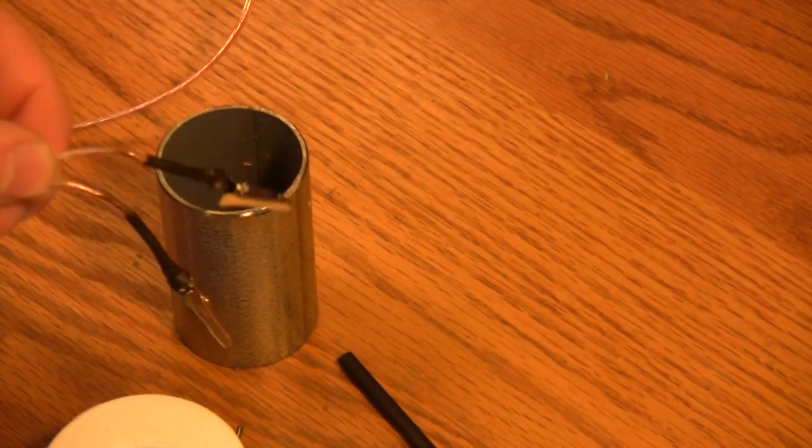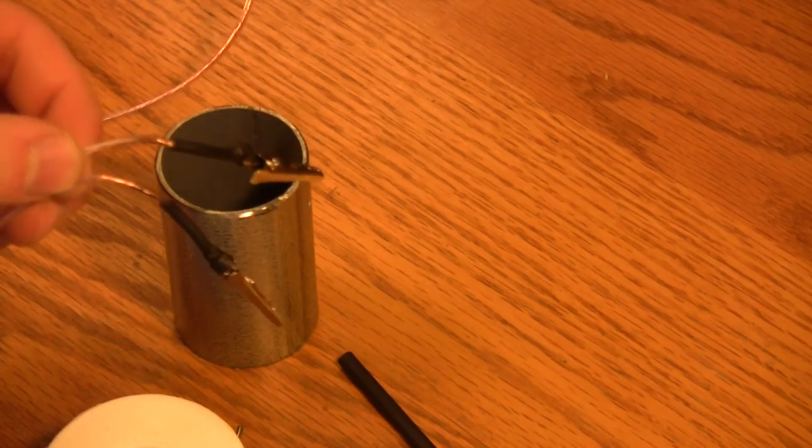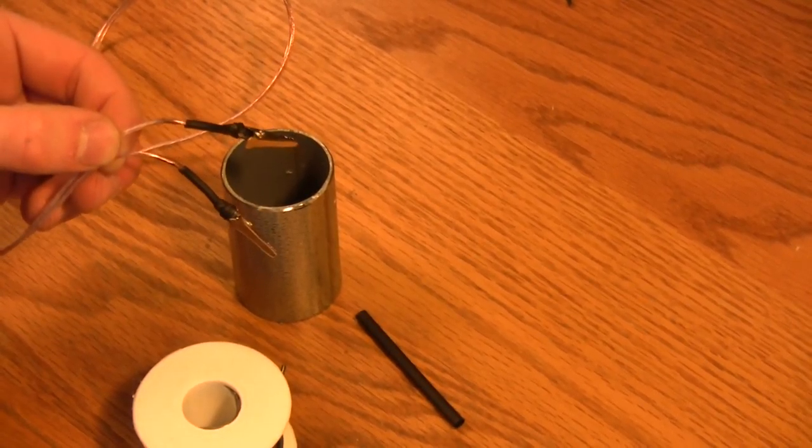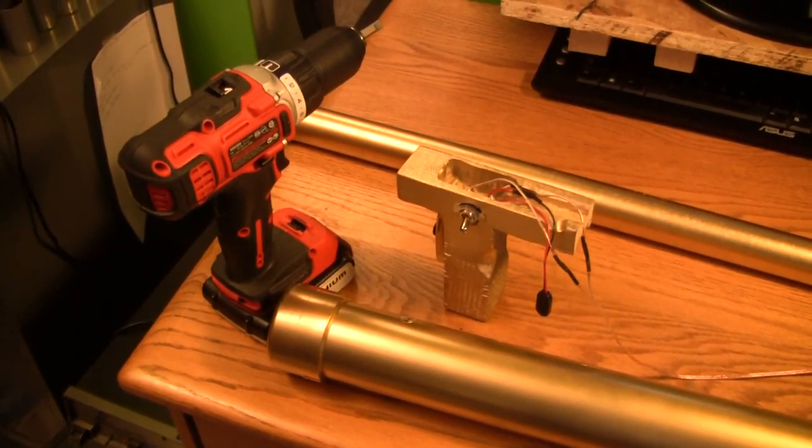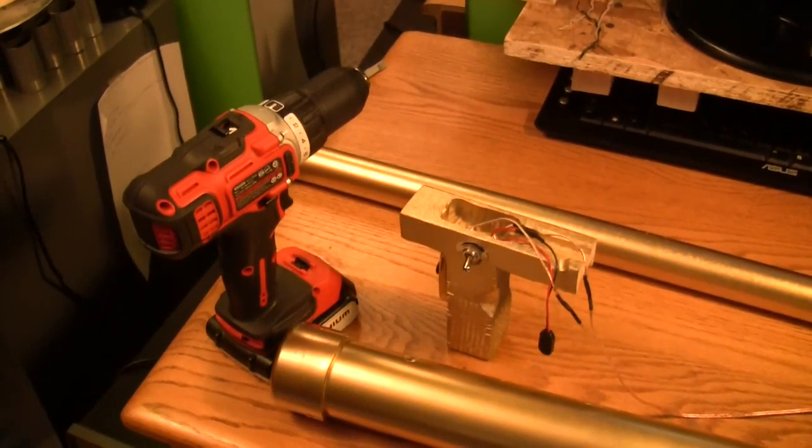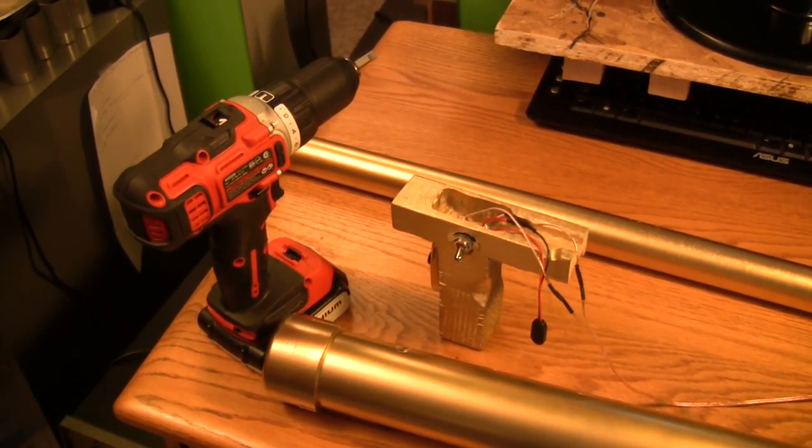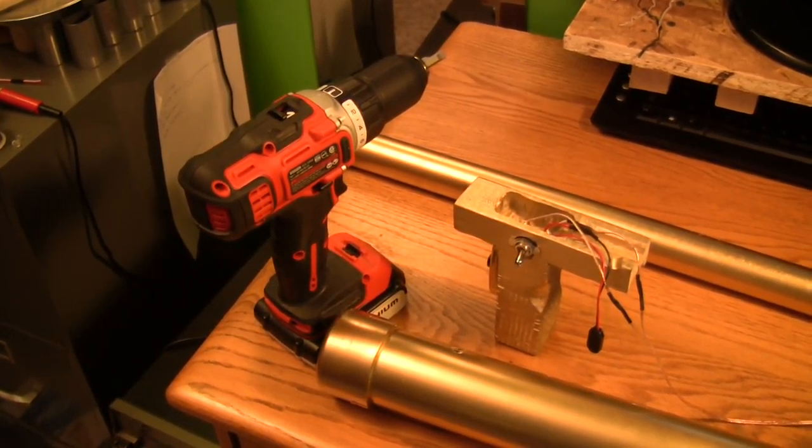I would probably suggest a slightly larger size of heat shrink tubing. This is a little tight, but I think it's going to work. That is the complete wiring for the pistol grip and rocket launcher. Now I just need to put everything together.